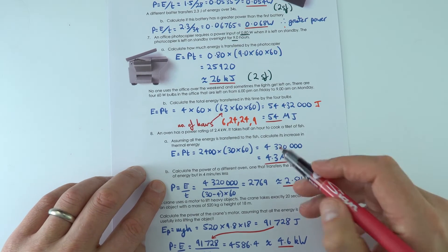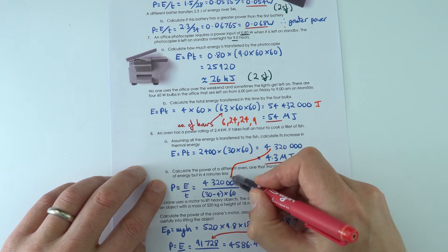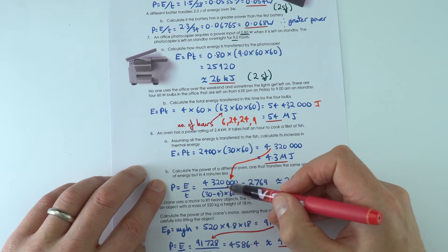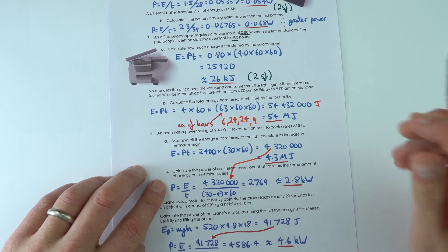And then we're using this value here again, the raw value that we have here of 4,320,000 in the subsequent calculation to find a value is 2.8 kilowatts.